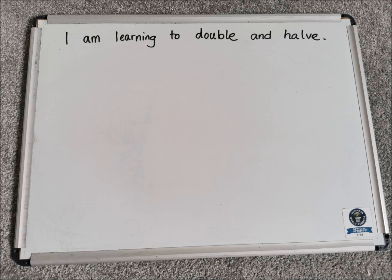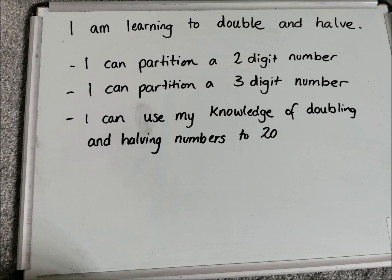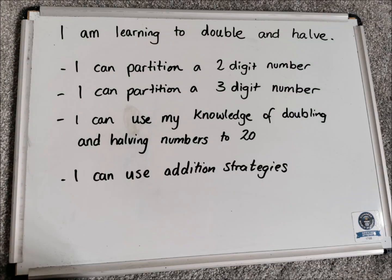Hi everyone, today we are going to be looking at a recap of doubling and halving strategies. There are lots of doubling and halving strategies, and the one we are going to look at today involves partitioning. We will be looking at how to partition a two-digit number and a three-digit number, using our knowledge of doubling and halving numbers to 20 and extending it into larger numbers.